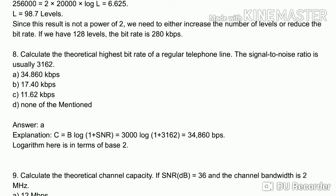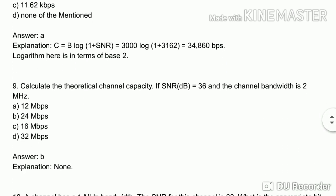Calculating: C = 3000 × log₂(1 + 3162) gives approximately 34,860 bps. Ninth question: calculate the theoretical channel capacity if SNR in dB equals 36 and channel bandwidth is 1 MHz. After converting dB and applying Shannon's formula, the answer is 24 Mbps.